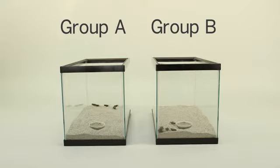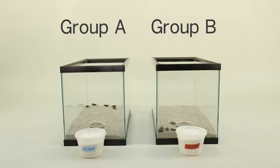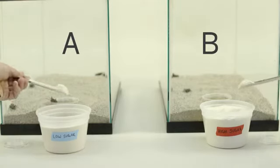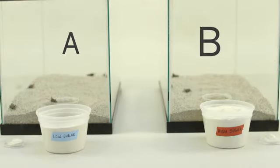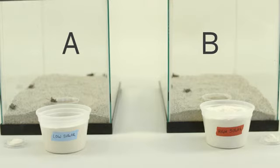In our experiment we're going to examine two groups of crickets, Group A and Group B. We'll give these two groups different amounts of sugar in their food and see how that affects their reproduction. We'll give Group A food that's low in sugar. Group B will get food that's high in sugar.